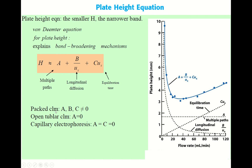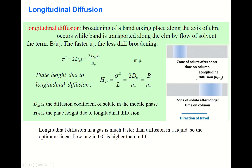The plate height depends on what kind of column you use. For packed columns used in liquid chromatography, A, B, and C terms are all non-zero. For open tubular columns, where the stationary phase is coated inside the column wall, the A term is zero, but B and C terms are non-zero. For capillary electrophoresis, A and C terms are zero — only the B term survives. This is important information.